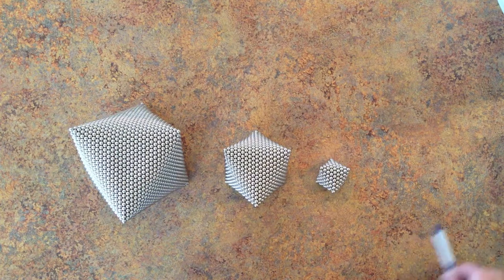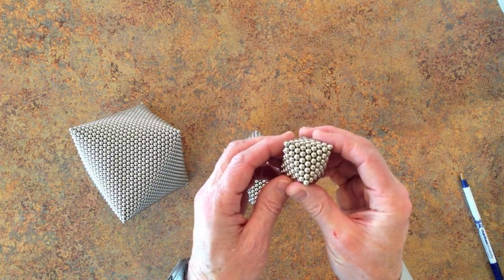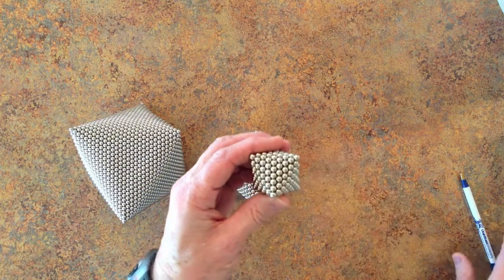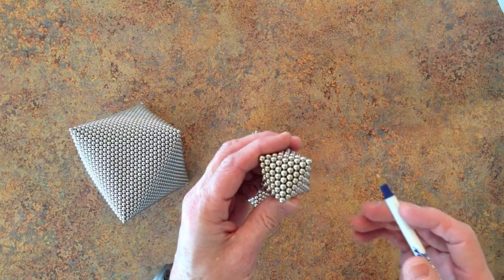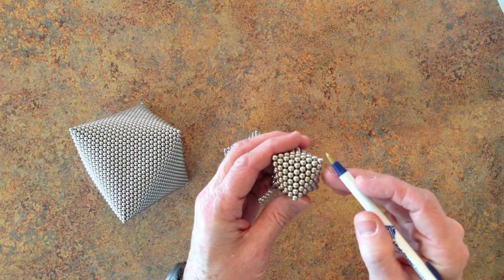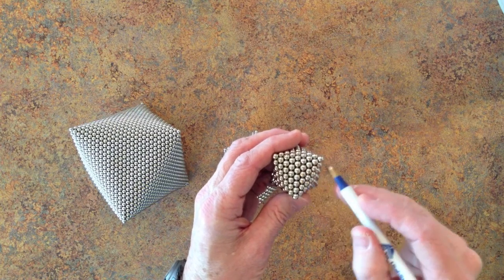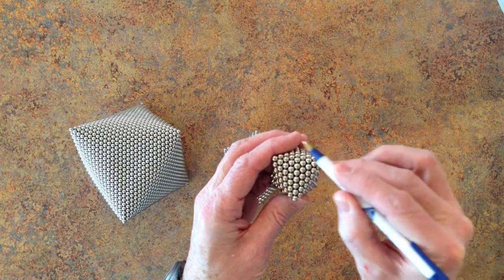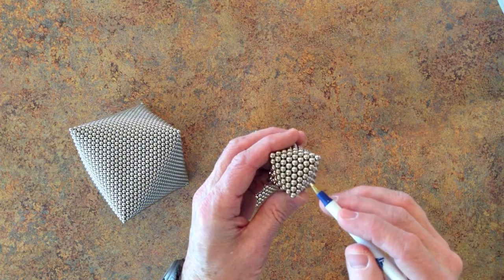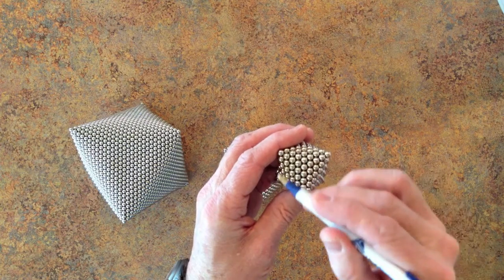I will build this small octahedron for you and will tell you how to build the other sizes. The size is measured by the number of magnets between one corner of a triangular face and the center of the face. This number is the approximate radius measured in magnet diameters of a circle that circumscribes the triangle.